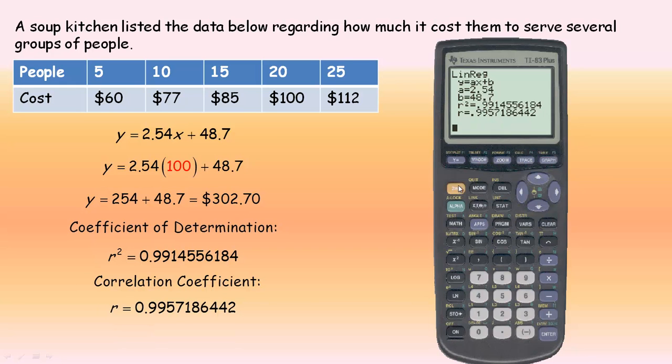If you're graphing calculator doesn't give those, it means the diagnostic is turned off. I'll show you how to do this. I want to go into catalog. It's called diagnostic. It's not actually too far to scroll to find it. If the diagnostic was off, you would just go to on and hit that. Then if we redid the command again, there it is.